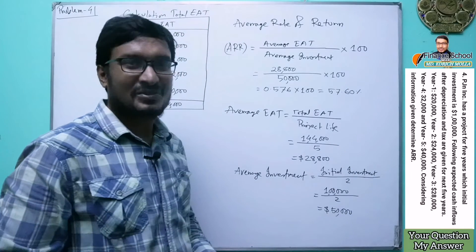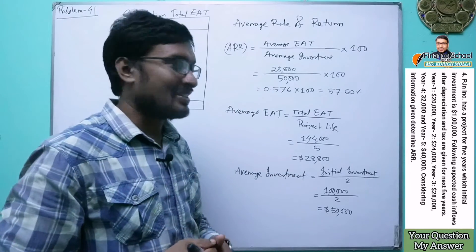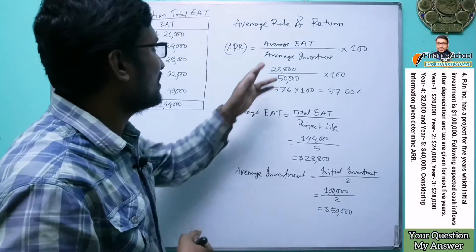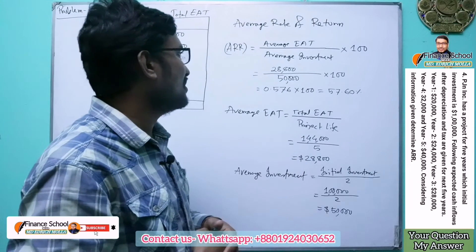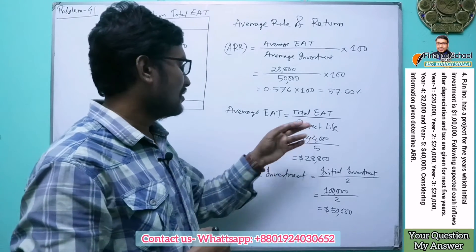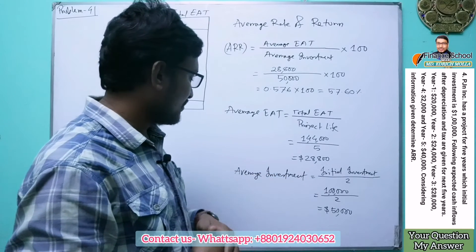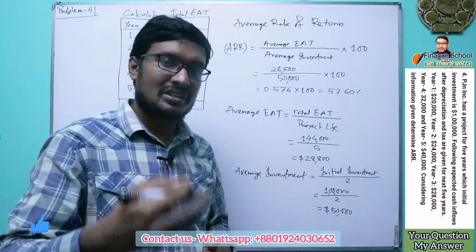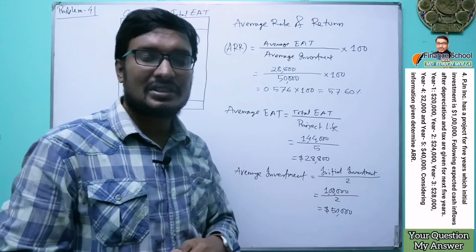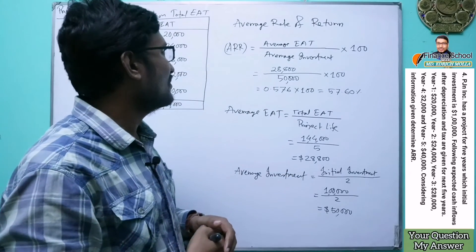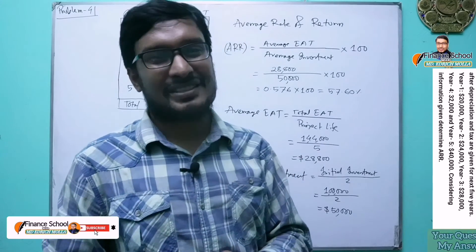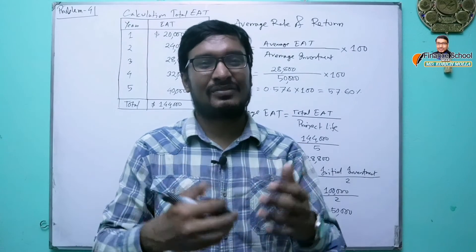To summarize, first find the sum of earnings after tax, then use the ARR formula where the numerator is Average EAT (total EAT divided by number of years) and the denominator is Average Investment (initial cash outlay divided by two). Multiplying by 100 gives the percentage ARR. In this way you can easily compute the average rate of return.